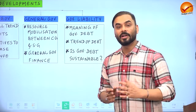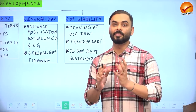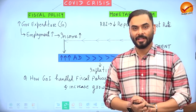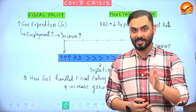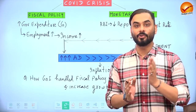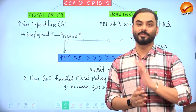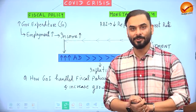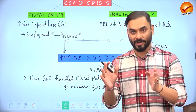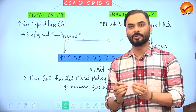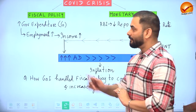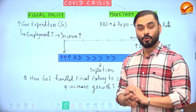According to experts, whenever an economy suffers from a crisis, there are two methods to come out of it: fiscal policy and monetary policy. The best approach is a combination of both. Let us look at what the Government of India did to integrate fiscal and monetary policy to help the Indian economy recover from the COVID crisis.